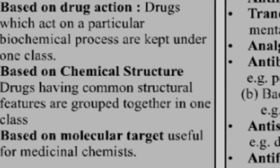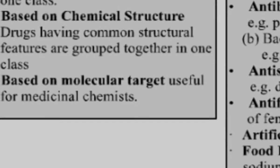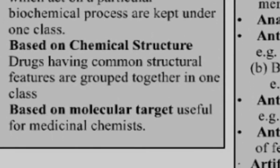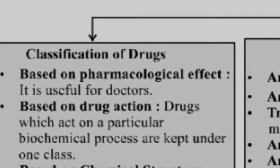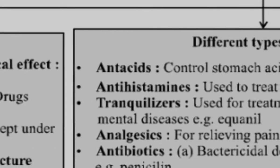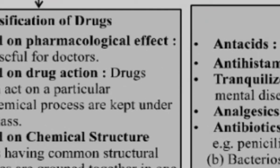Third: based on Chemical Structure — on the basis of chemical structures, drugs are classified into different groups. Fourth: based on Molecular Target, which is useful for medical chemists. These four classifications of drugs we will discuss in depth in our next video; here we will discuss only the summary of this chapter.